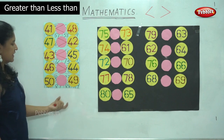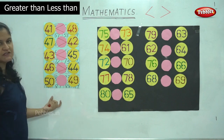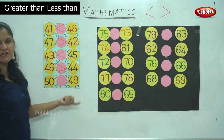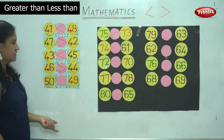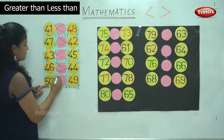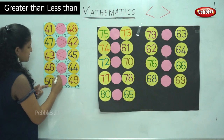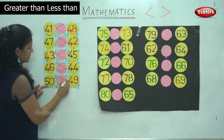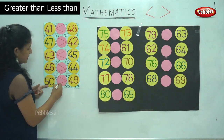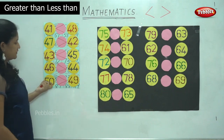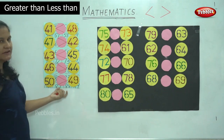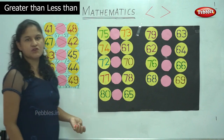Next we have 50 and 49. So 50 is the bigger number, so the mouth opens towards the bigger number. We read it as 50 is greater than 49.